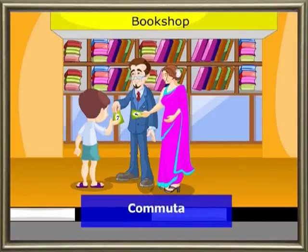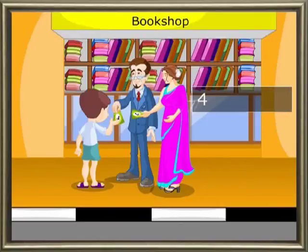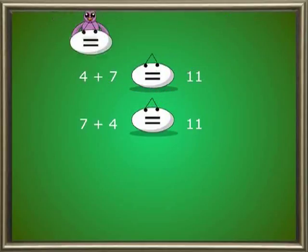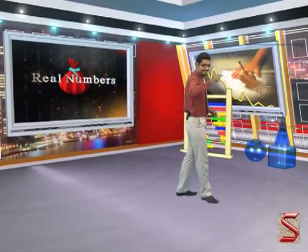Let us meet Raju and his parents. Raju wants to go and purchase some pencils from the market. Raju's father gives him rupees 7 and his mother gives rupees 4 — that is 11 rupees. Let us see if we reverse the amounts: when the father gives rupees 4 and the mother gives rupees 7, he still ends up with a total of 11 rupees. 4 + 7 = 11 and 7 + 4 = 11, therefore 7 + 4 = 4 + 7. The order of numbers in addition is not important — this property is known as the commutative property.